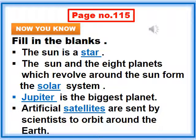Number two: The sun and the eight planets which revolve around the sun form the solar system. Number three: Jupiter is the biggest planet. Number four: Artificial satellites are sent by scientists to orbit around the earth.